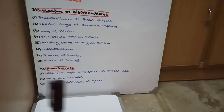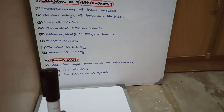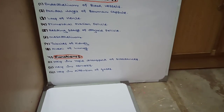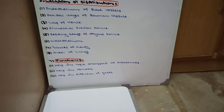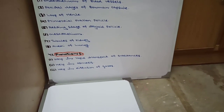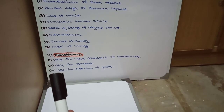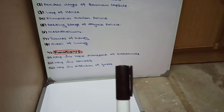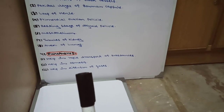Now we come to the functions. There are three functions of simple squamous epithelium. Number one: it helps in rapid transport of substances, like in the kidney. Number two: it helps in osmosis of gases, like in the alveoli of the lungs. Number three: it helps in diffusion of gases in the alveoli of the lungs, aiding in gaseous exchange.